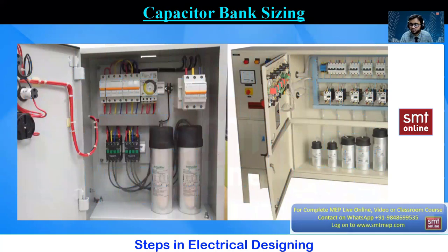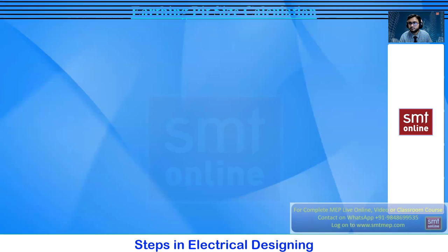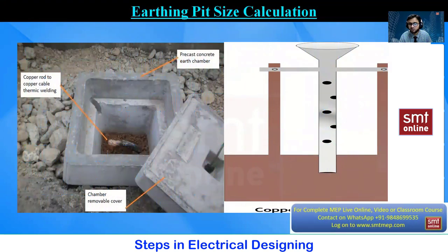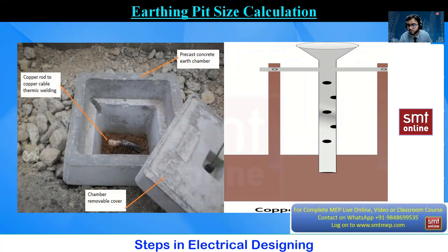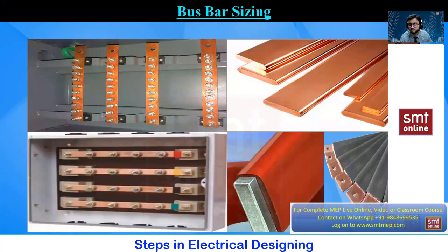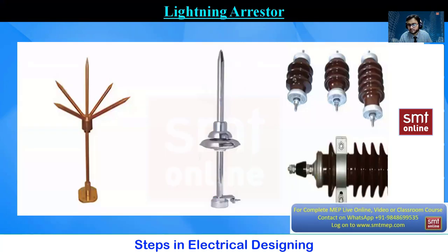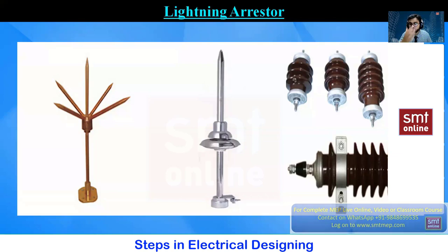A capacitor bank is used to enhance and maintain the power factor. For earthing, we work with the traditional concept to find the earth resistance value and the number of earthing pits — different countries have different standards, and satisfying the earthing range is essential for project approval. For bus bar sizing, copper, aluminium, or galvanized iron conductors with insulation are used. For lightning arresters, high-rise buildings, petrol stations, or projects with solar panels, boilers, or chillers on the roof require lightning protection, as these may attract lightning especially in rainy conditions.